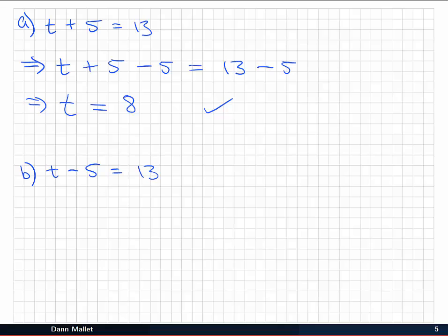Pause the video if you like, and try out a similar process for part B. A similar line of thinking would say if I have a minus 5 obstructing me from isolating t, I'm going to add that 5 to both sides. So t minus 5 plus 5 is again just t by itself isolated, and on the right 13 plus 5 is 18. We can take that back, substitute in, and 18 minus 5 is indeed equal to 13.